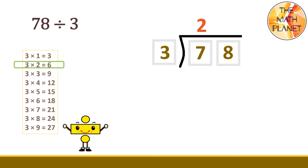Write the 2 above the 7. Then, move to the multiplication step: 2 times 3 equals 6. Then, subtract: 7 minus 6 equals 1. After you subtract, the remainder should be less than the divisor. Since 1 is less than 3, it's okay. We can move to the next digit and bring it down. So, we will bring down the 8.